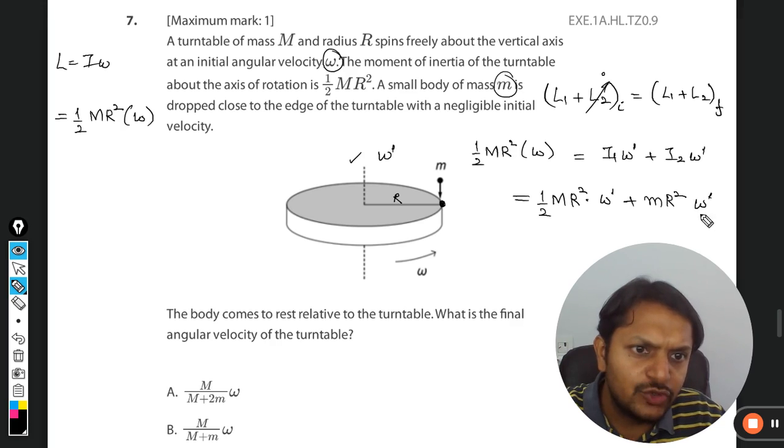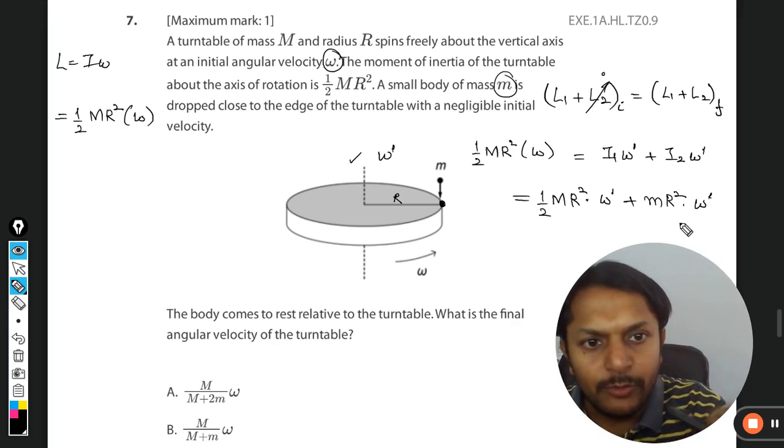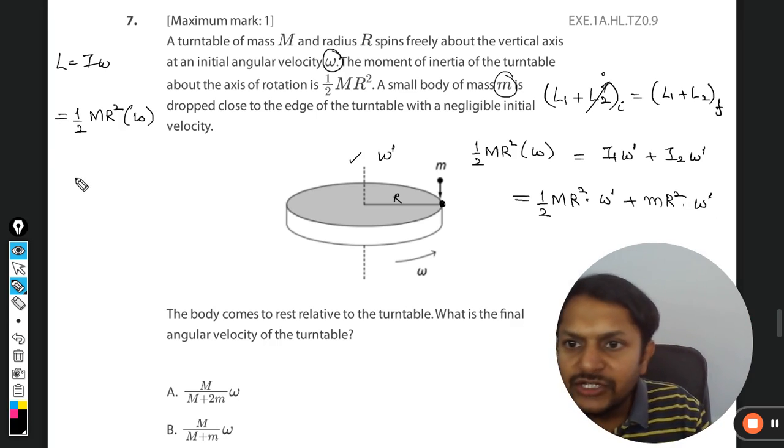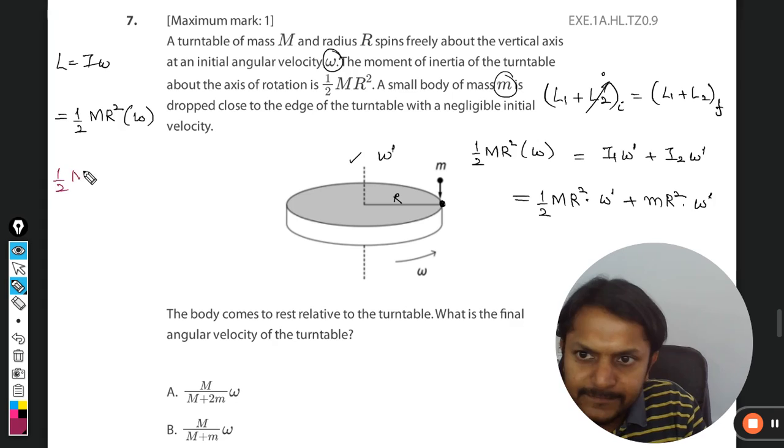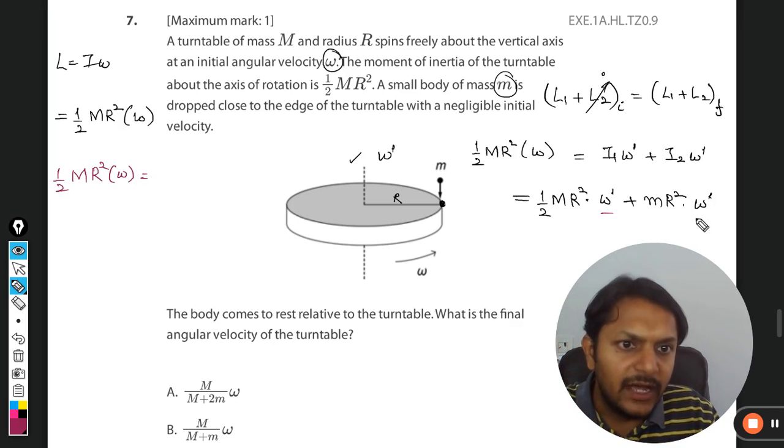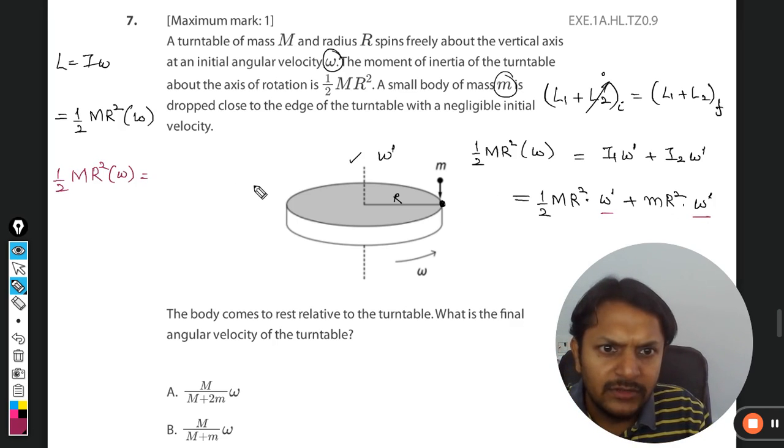This into omega dash. Accordingly we can find the omega dash from this equation. So let us try to simplify it. Here I am taking this omega dash common and R² can also be taken common.